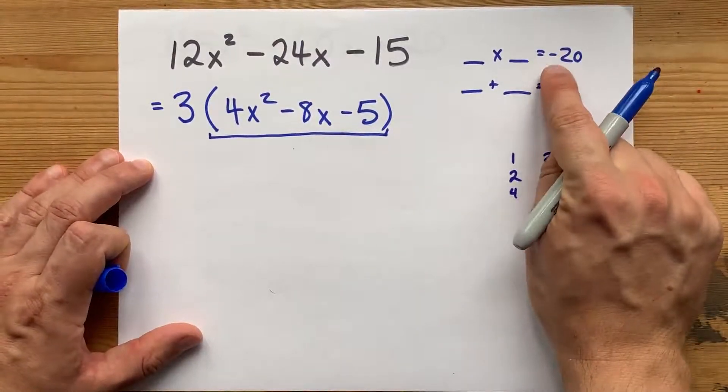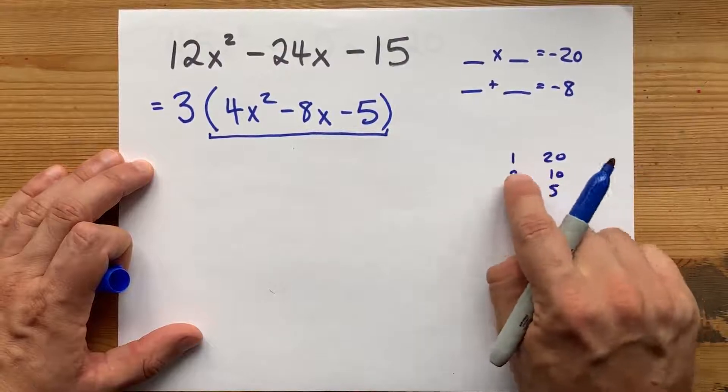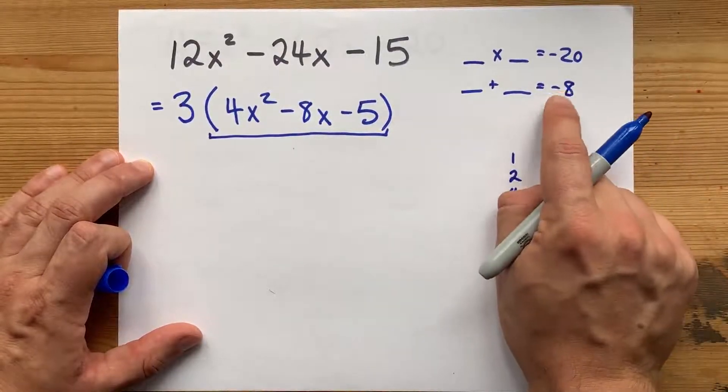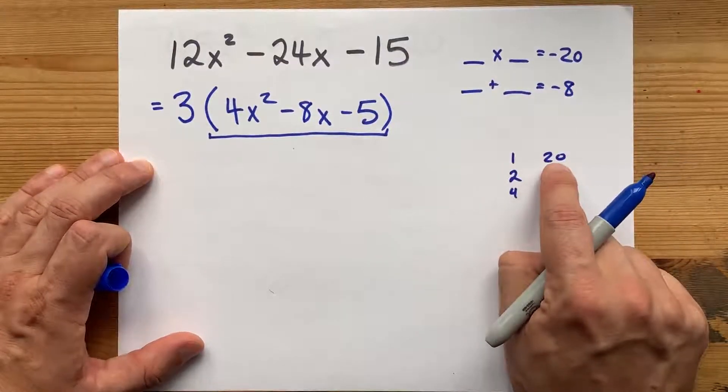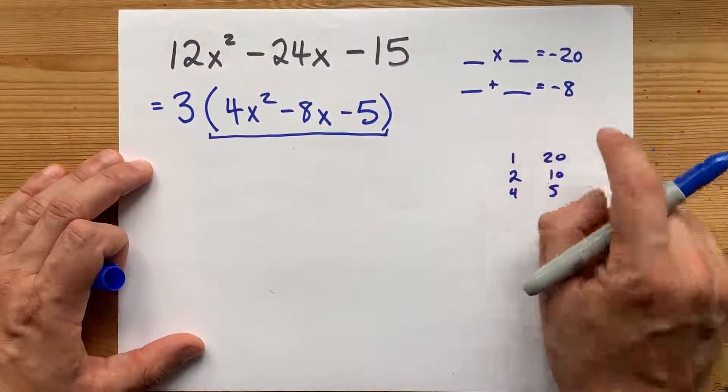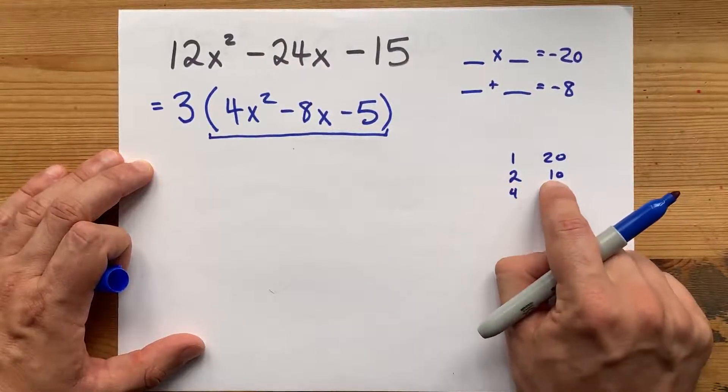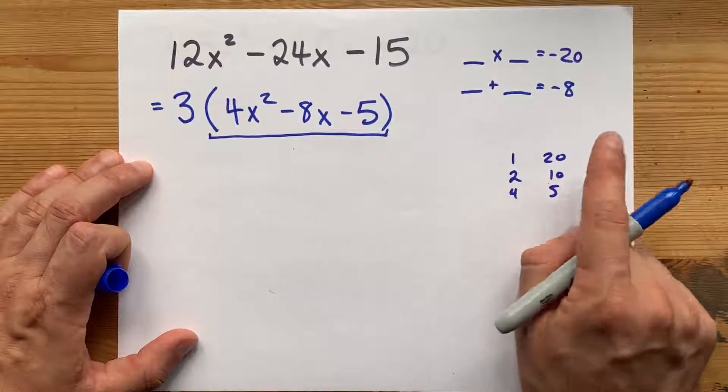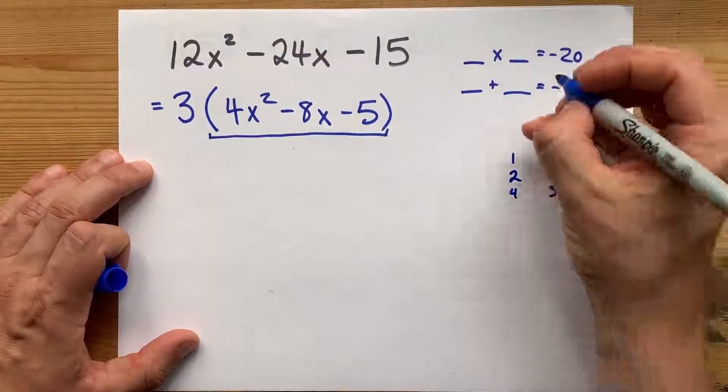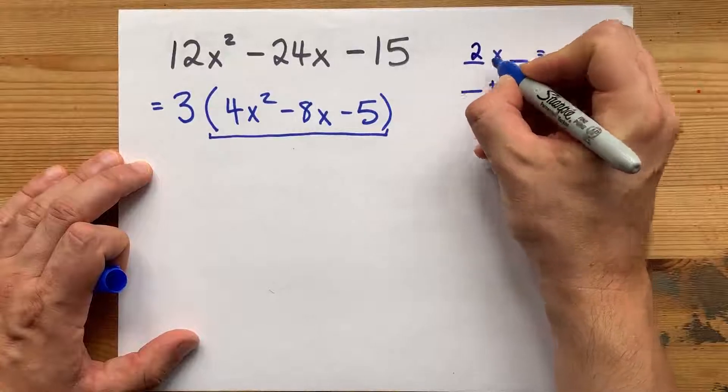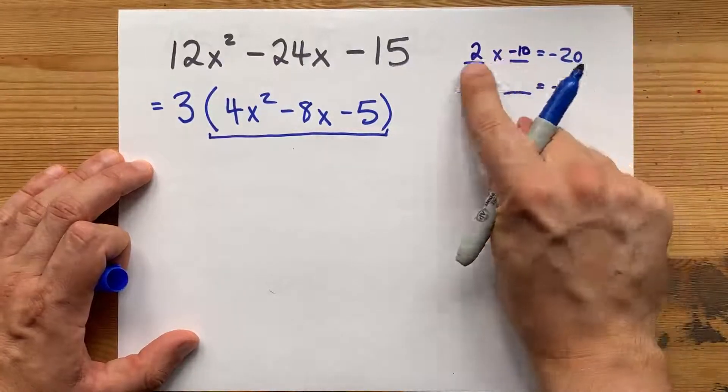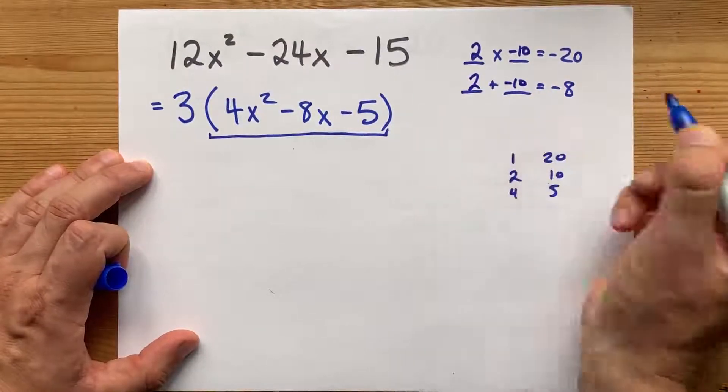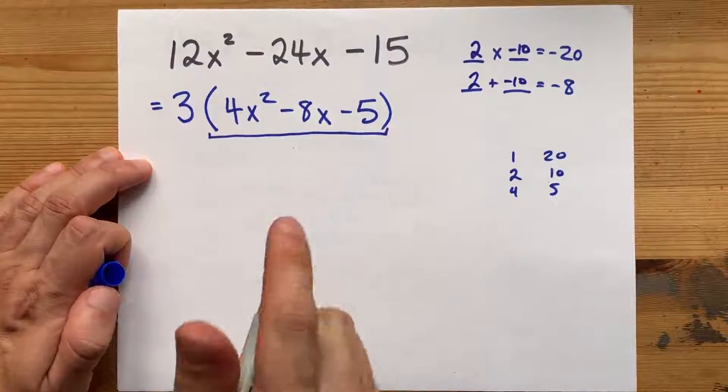Now, these multiply to make a negative. So, any of these could be negative. Maybe it's negative 1 and positive 20. No, those don't add to negative 8. Is it positive 1 and negative 20? No, those don't add to negative 8 either. Is it negative 2 and positive 10? No, because those would add to positive 8. But that was the 8 we wanted. That tells me that it's probably positive 2 and negative 10. Those multiply to give me negative 20. And they add to give me negative 8. Those are the magic numbers.